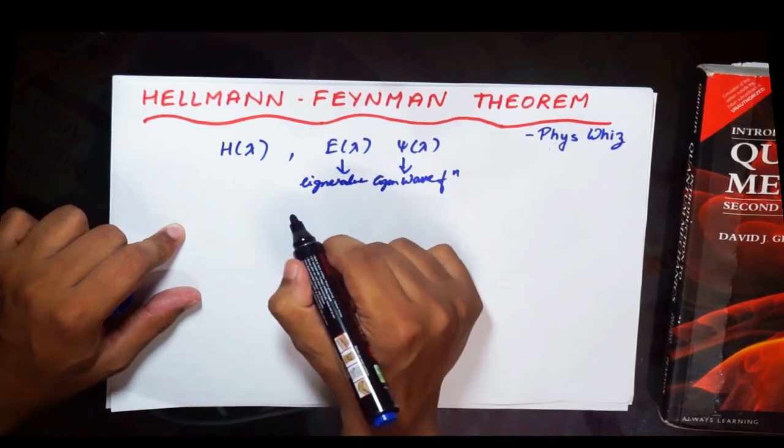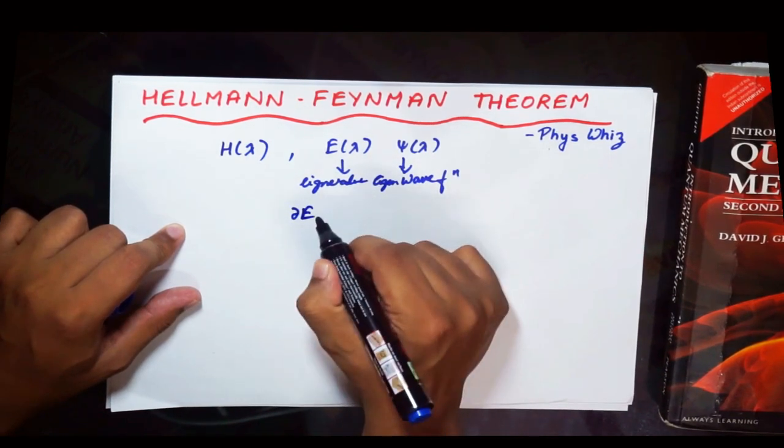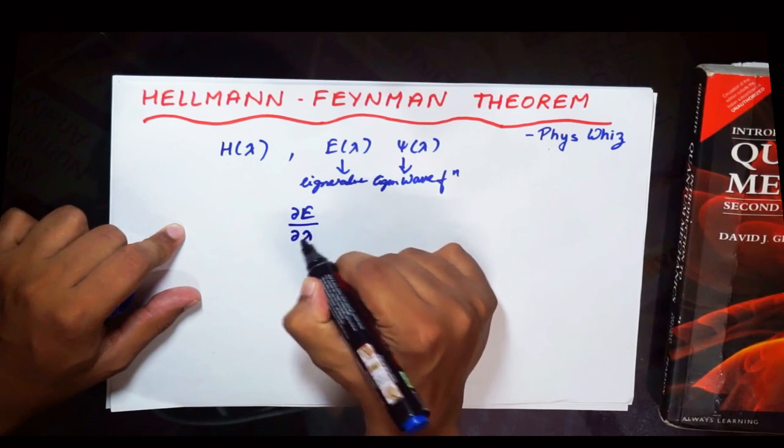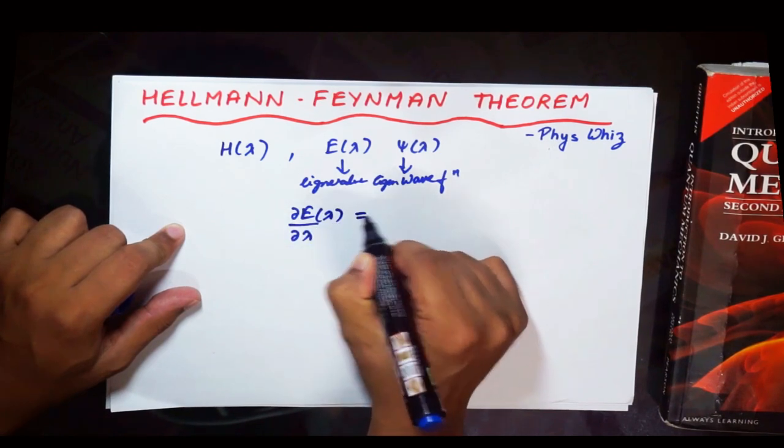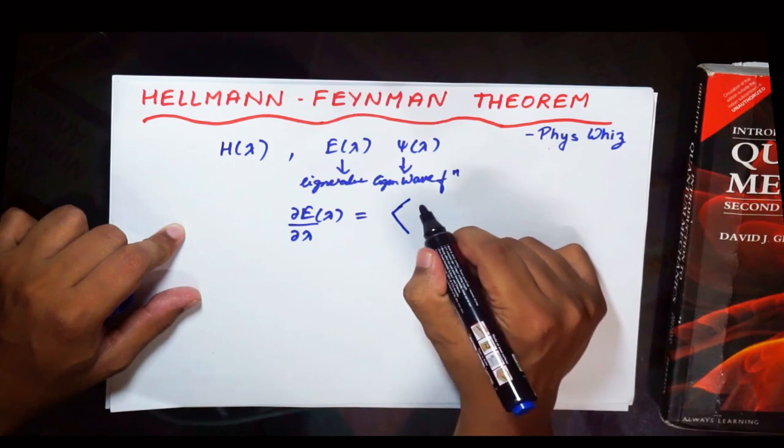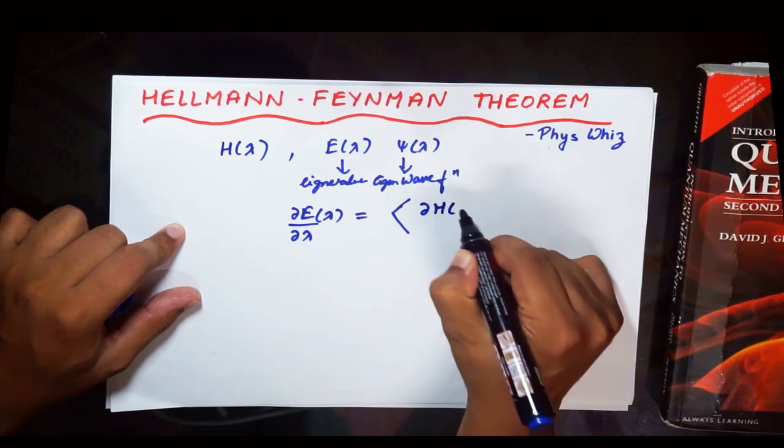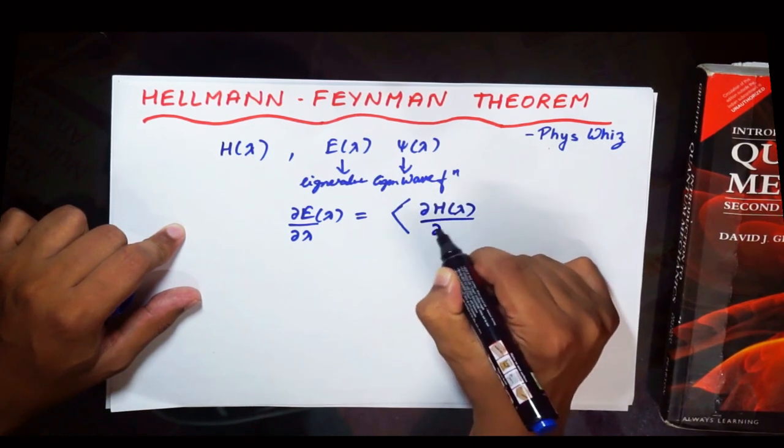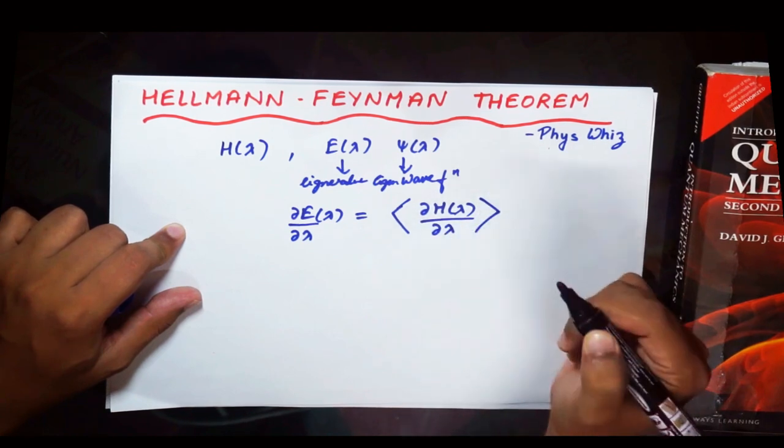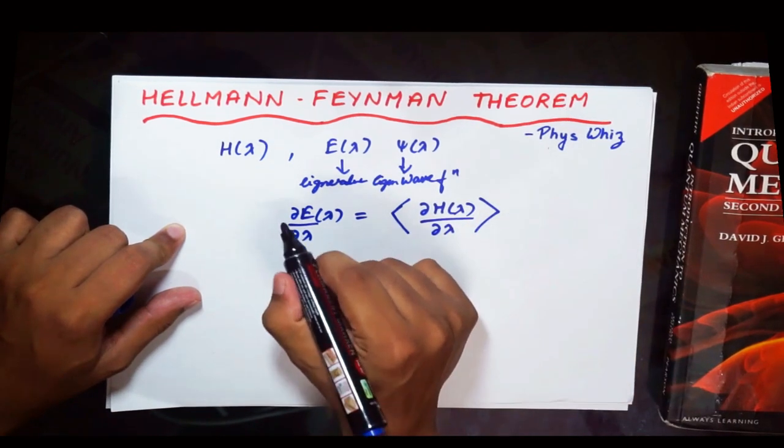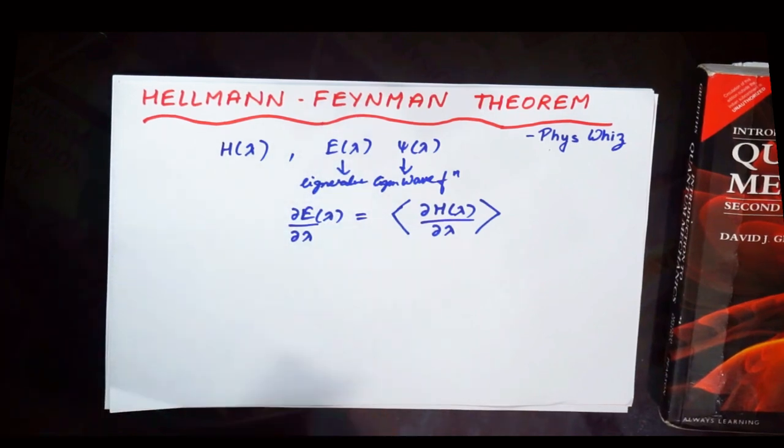Then the derivative of the energy with respect to this parameter lambda is equal to the expectation value of the derivative of the Hamiltonian with respect to the parameter lambda. So this is basically the Hellmann-Feynman Theorem or the statement of the Hellmann-Feynman Theorem.